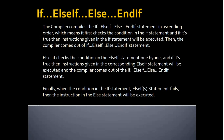Next one is the if-else if-else-endif statement. The compiler compiles the if-else if-else-endif statement in ascending order, which means it first checks the condition in the if statement, and if it's true then the instruction given in the if statement will be executed. Then the compiler comes out of the if-else if-else-endif statement. Otherwise it checks the condition in the else if statement one by one, and if it's true then the instruction in the else if statement will be executed. And the compiler comes out of the statement. Finally, when all conditions fail, the instruction in the else statement will be executed.